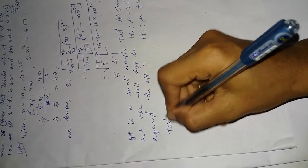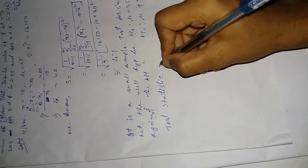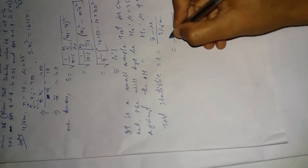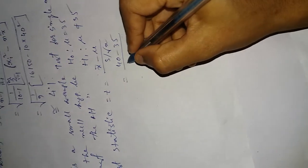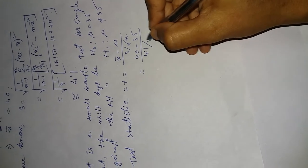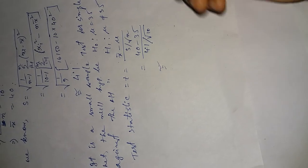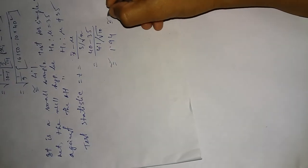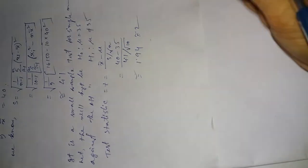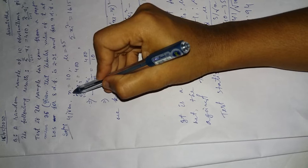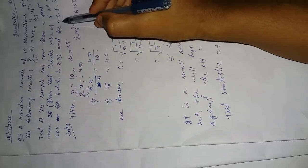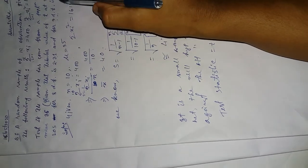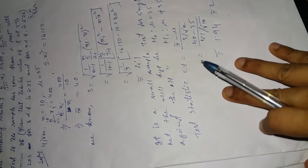Now test statistic. T equals x bar is 40, mu is 35, s is calculated 4.1, divided by root 10. After calculation, the result is 1.94. Since n is 10, that means sample size is 10, so we need to consider the degrees of freedom as 9. Therefore, we consider 2.26.